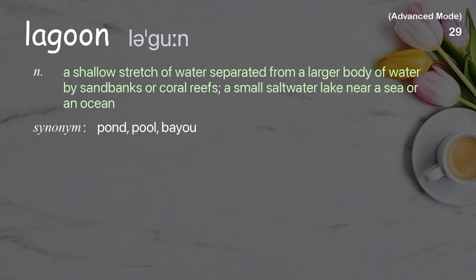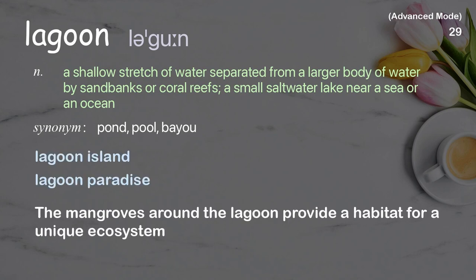Lagoon: A shallow stretch of water, separated from a larger body of water by sandbanks or coral reefs; a small saltwater lake near a sea or an ocean. Examples: lagoon island, lagoon paradise. The mangroves around the lagoon provide a habitat for a unique ecosystem.